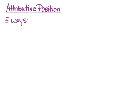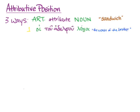We learned that there are three ways to do attributive position. If you have an article and then an attribute and then the noun, you have attributive position. I like to call this the sandwiching kind, where the attribute is sandwiched between the article and its noun. I gave you the example of hoi tu adelphu logoi, 'the words of the brother,' where 'of the brother,' a noun in the genitive, is in attributive position, telling us more about which words we're talking about.